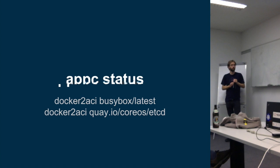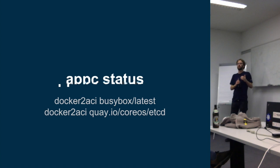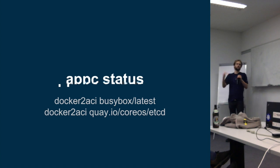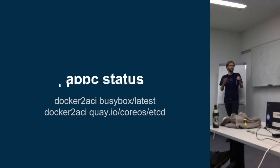One of our plans is for Rocket to take advantage of the Docker-to-ACI library so that Rocket can run Docker images effectively natively. It will do this translation inline — pulling from Docker repositories, pulling down the image you already have, and running it as a Rocket image.